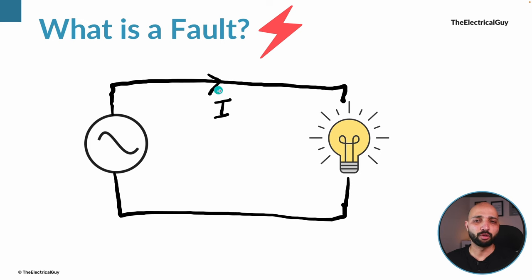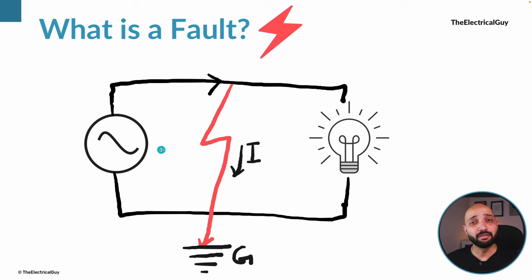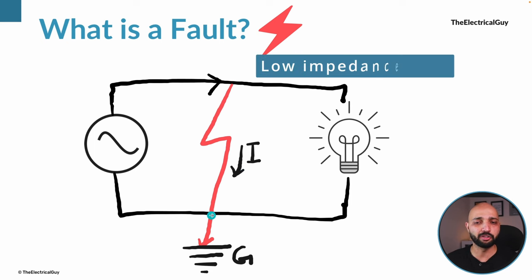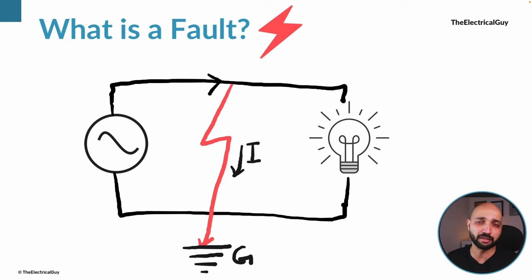Now let's say one of the live parts of this circuit is touching the ground. What has happened is the current is diverted from its intended path — it is now flowing through this low impedance path, shown by the red line.